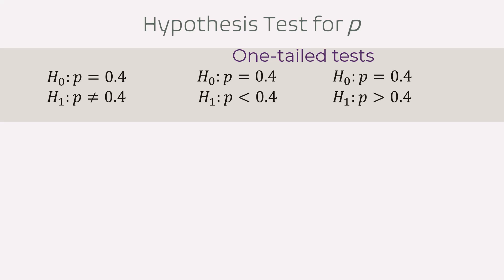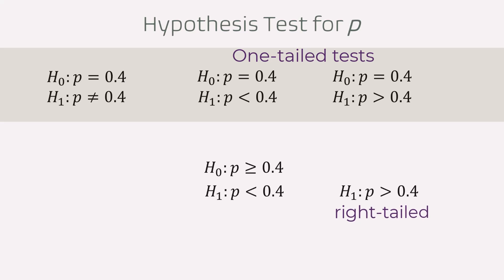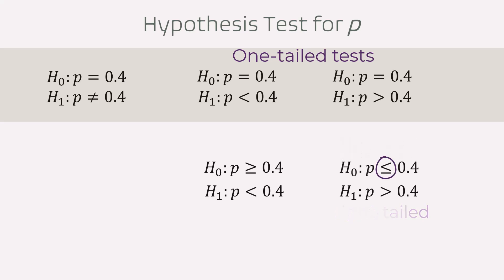That is, for the left-tailed test, the null hypothesis will be written with a greater than or equal sign. And for the right-tailed test, the null will be written with a less than or equal sign. So double check to see which of these two conventions your course adopts.